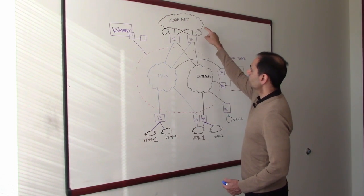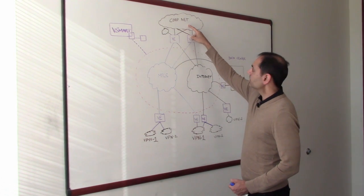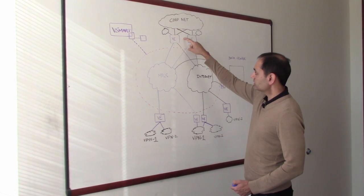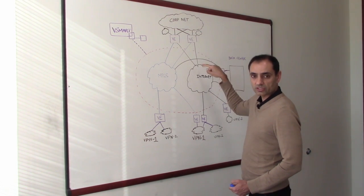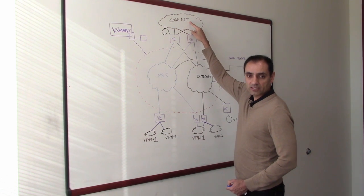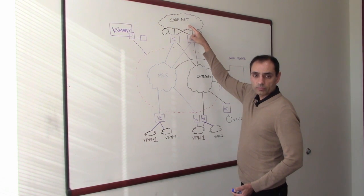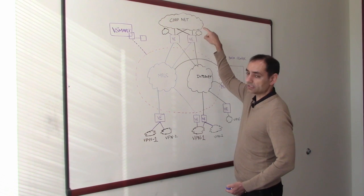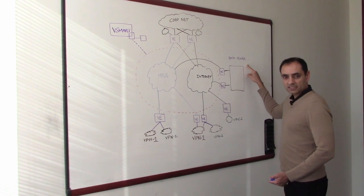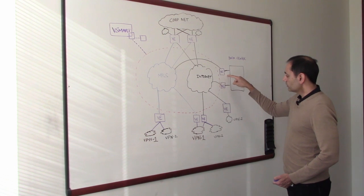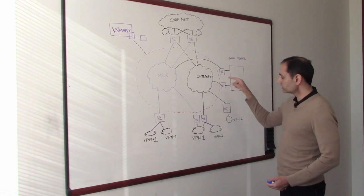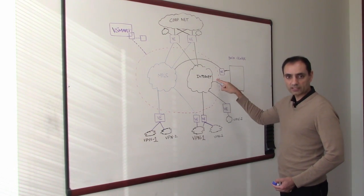In the diagram I'm also showing a corporate site where there are two vEdge network devices connected to both transports. Connectivity to the corporate can be layer three or layer two. It could be IPv4 unicast, and you could have IPv4 multicast enabled in this network as well. There's also a data center which has two vEdges acting as WAN edge devices, connected to both transport networks and this overlay network.